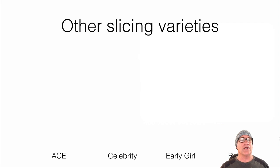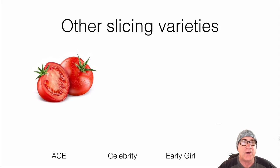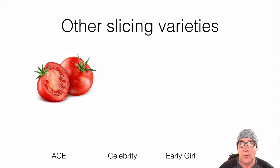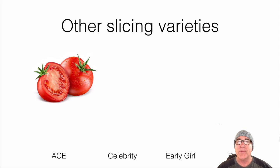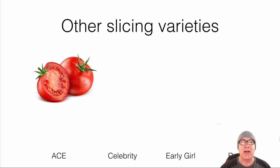Now let's take a look at some of the other slicing varieties. The Ace tomato has been around a lot of years — it used to own the marketplace, so it's a 50-plus year old variety. It's not so good on disease resistance, which is one reason it's been replaced, but if you're growing in the backyard it's a medium-sized variety and a pretty decent producer. You can still find Ace tomato improved varieties around.